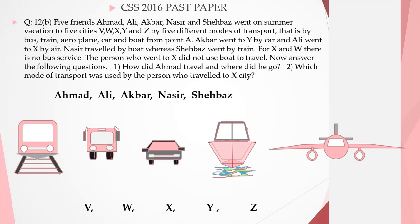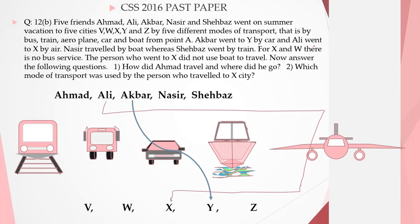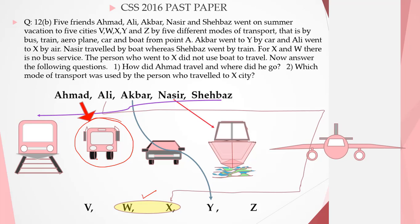Five friends — Ahmed, Ali, Akbar, Nasir, and Shahbaz — went on summer vacation to five cities V, W, X, Y, and Z by five different modes of transport: bus, train, aeroplane, car, and boat from point A. Akbar went to Y by car, and Ali went to X by air. Nasir travelled by boat whereas Shahbaz went by train. For X and W, there is no bus service. The person who went to X did not use a boat. Only one mode of transport is left — bus — so Ahmed travelled by bus and went to either V or Z. For the second question, aeroplane is the answer.